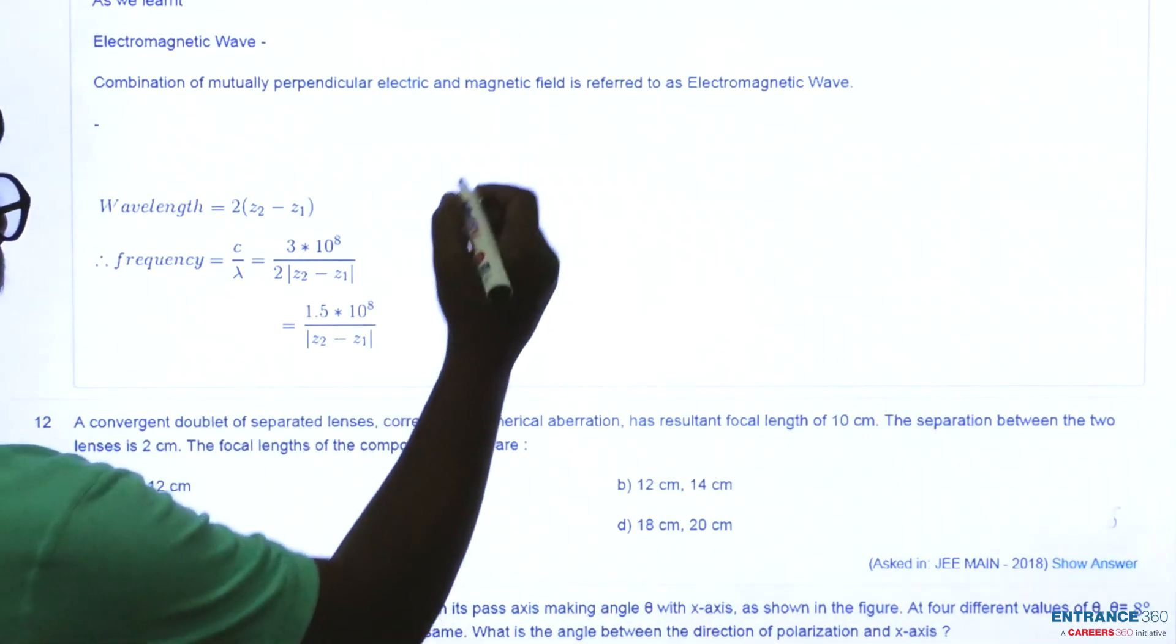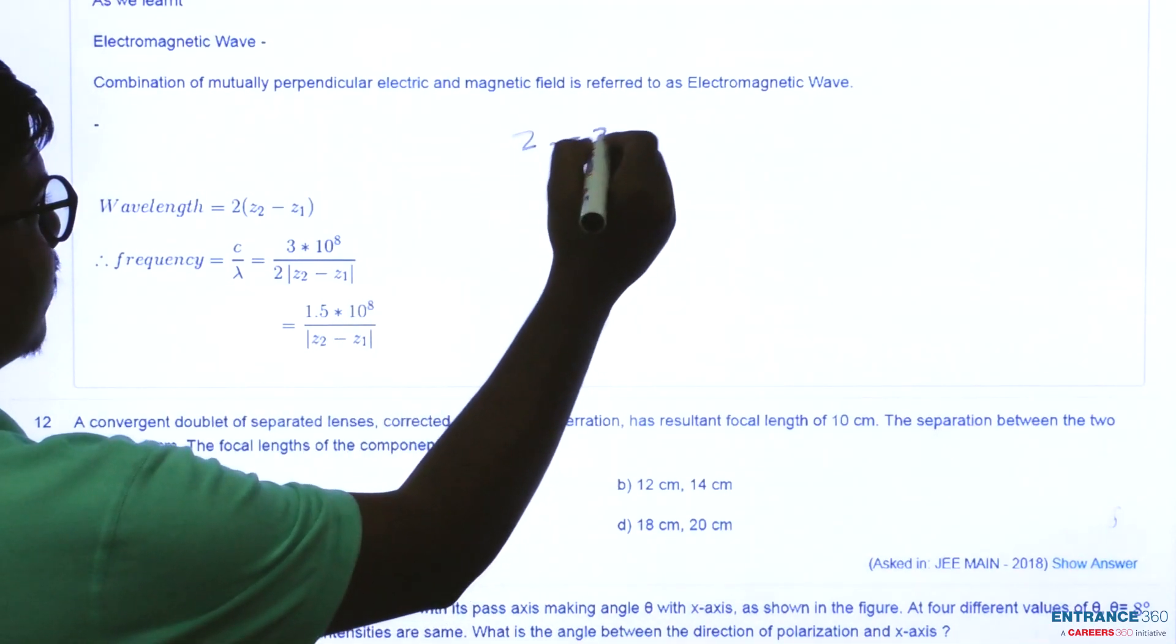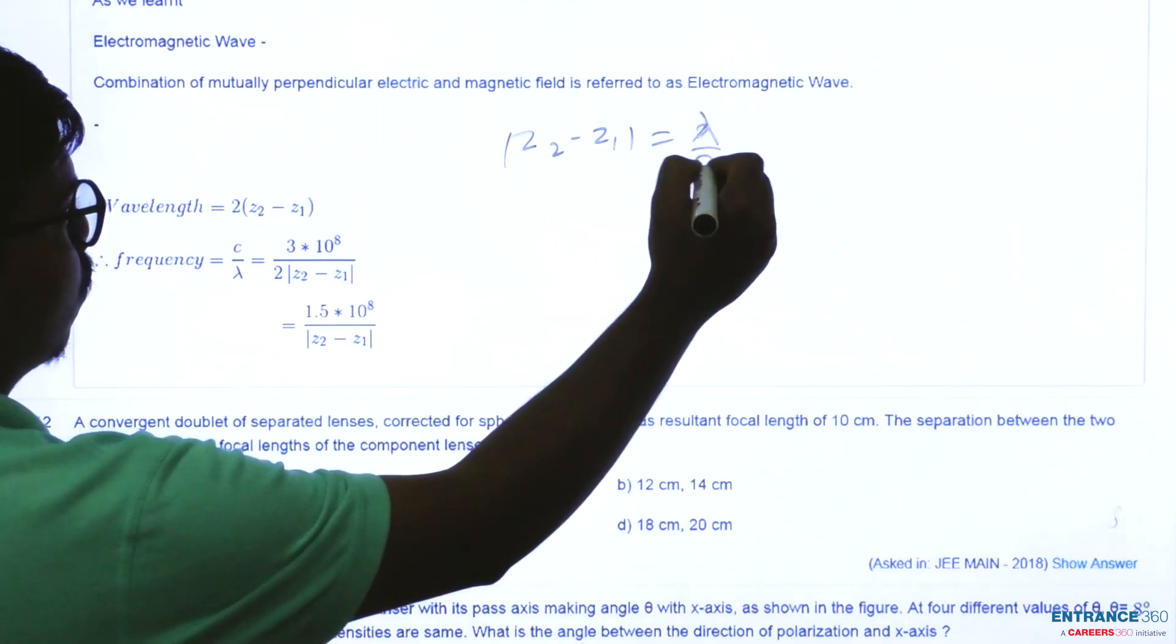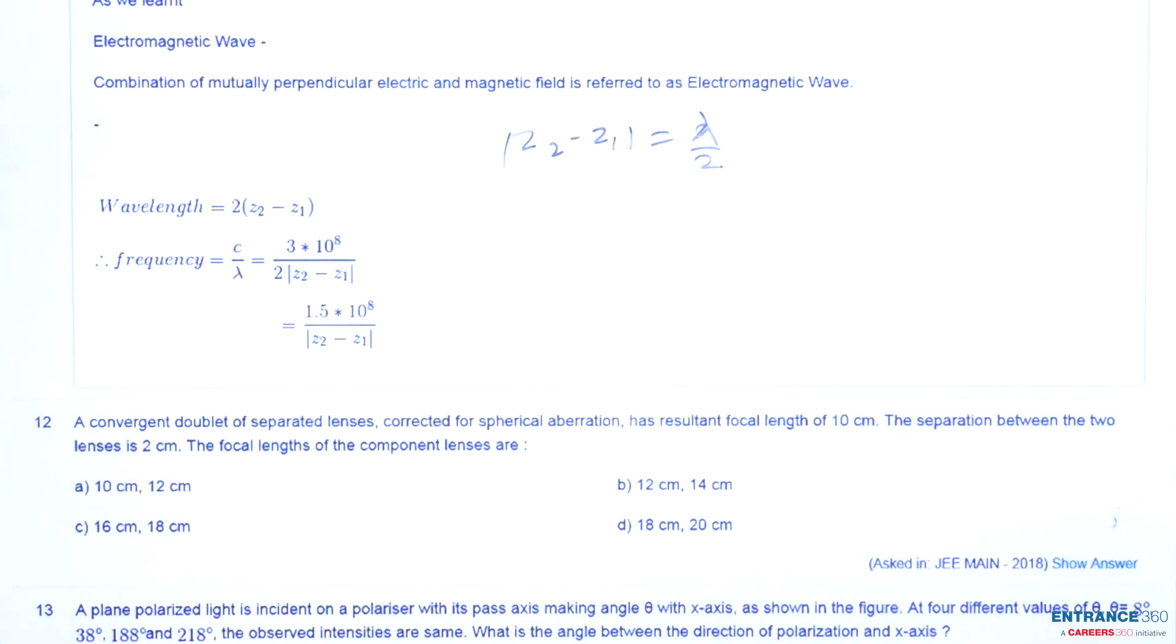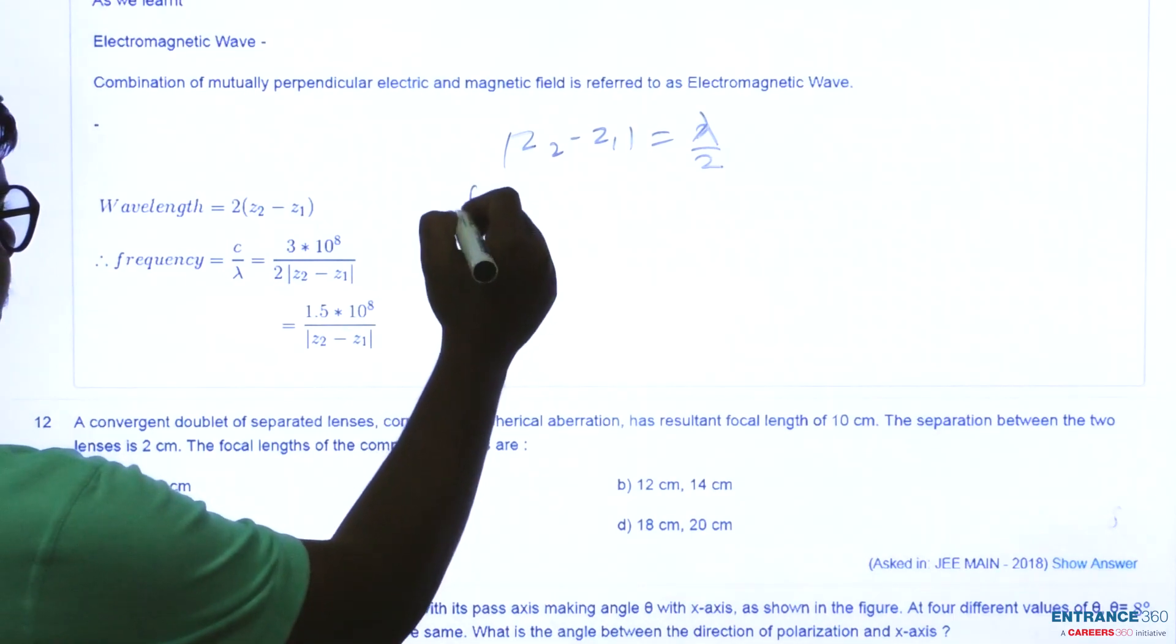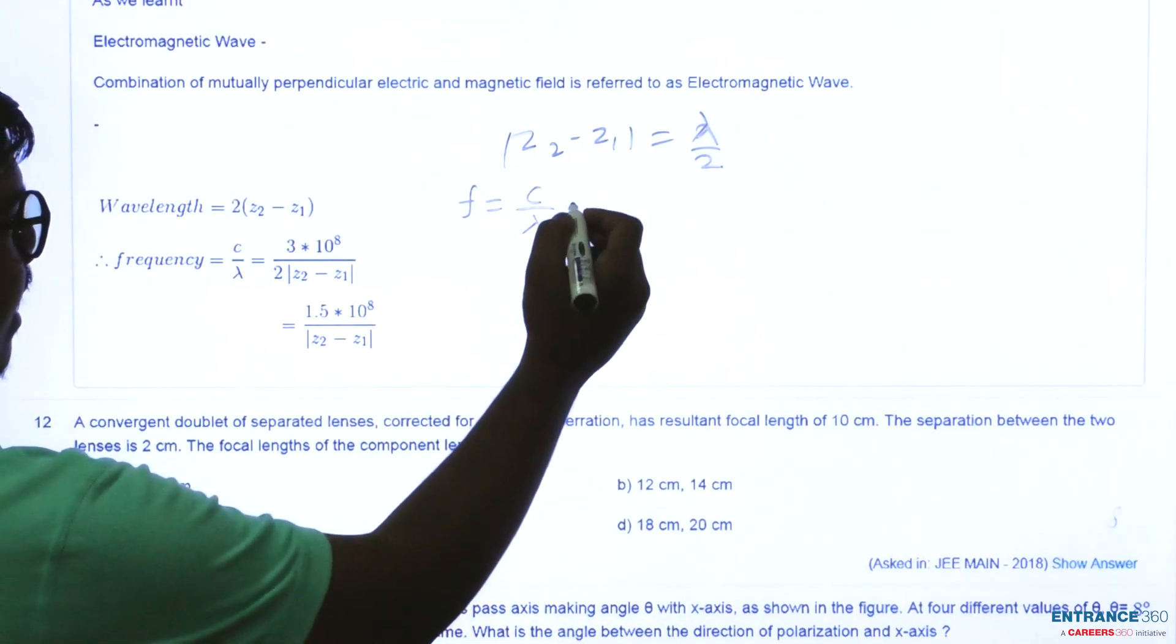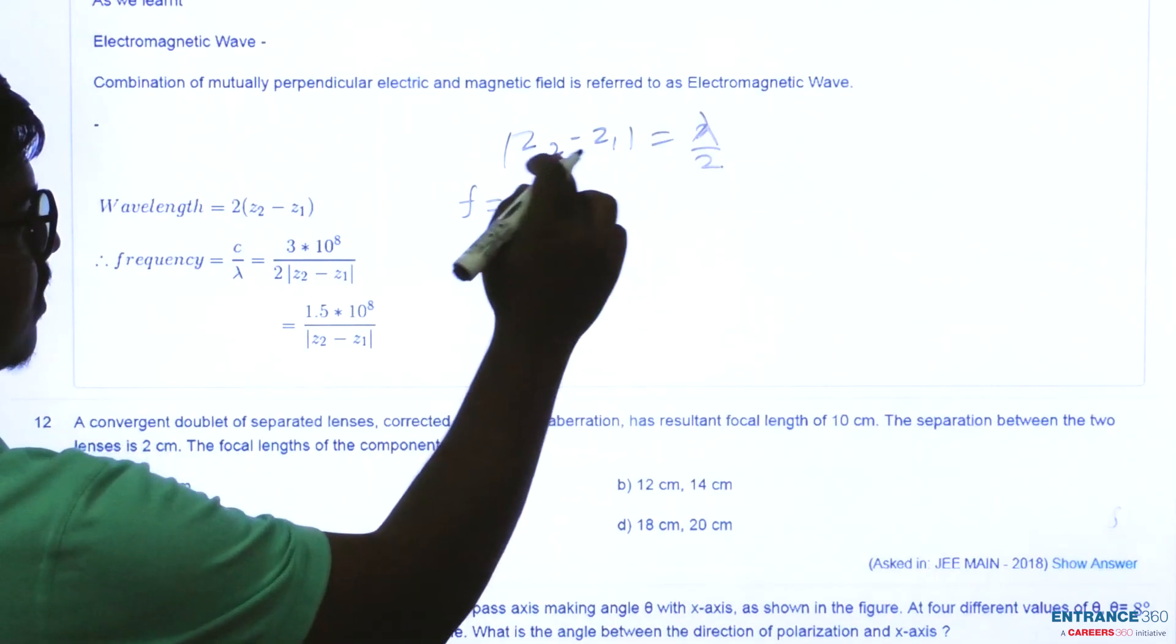So after reading the question we find out that z2 minus z1 was given as lambda by 2 and we want to find out the frequency. So the frequency is given as c upon lambda and we get lambda as 2 times of this.